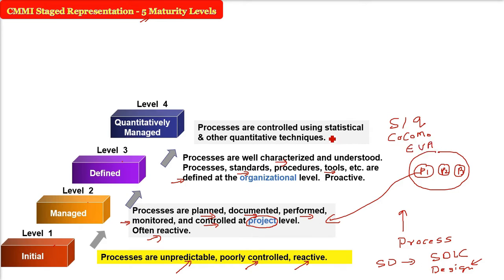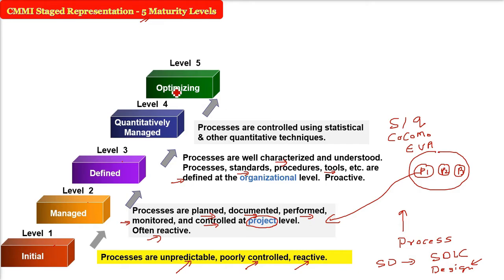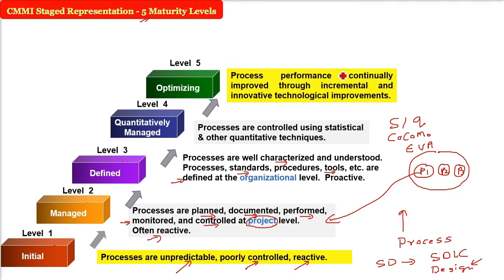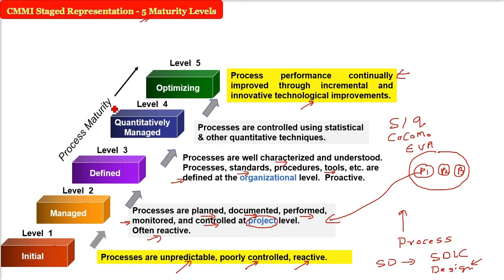Level five is Optimizing — the highest level. If an organization is at the optimizing level, it means that along with all achievements from levels one through four, the processes are continuously improving through incremental and innovative technological improvements. This is illustrated in the process maturity diagram.